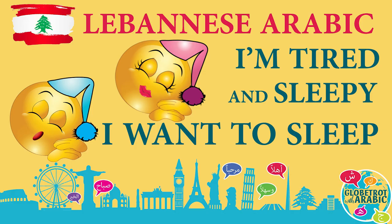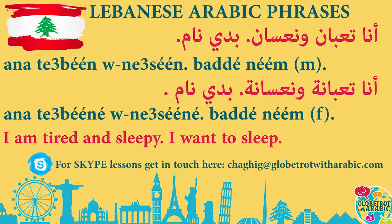Let's say I'm tired and sleepy — I want to sleep — in Lebanese Arabic. That's masculine. Let's break it down. You notice there's no 'am' in Arabic. It's like in English you're saying 'I'm tired.' W or wa means 'and.'